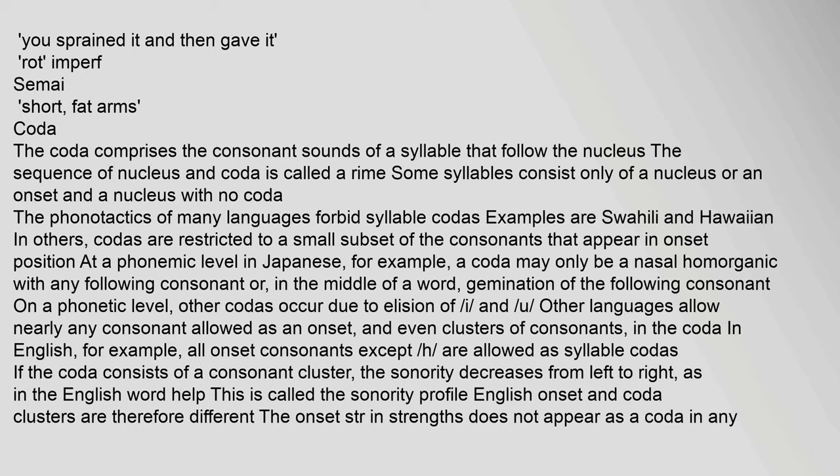The coda comprises the consonant sounds of a syllable that follow the nucleus. The sequence of nucleus and coda is called a rhyme. Some syllables consist only of a nucleus, or an onset and a nucleus with no coda. The phonotactics of many languages forbid syllable codas — examples are Swahili and Hawaiian. In others, codas are restricted to a small subset of the consonants that appear in onset position. In Japanese, a coda may only be a nasal homorganic with any following consonant, or gemination of the following consonant.